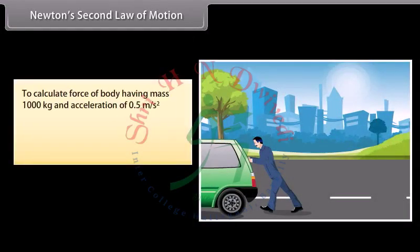To calculate force of body having mass 1,000 kg and acceleration of 0.5 meter per second square, then F is equal to 1000 into 0.5, which is equal to 500 Newton or kilogram meter per second square.